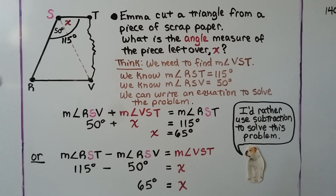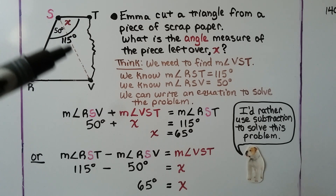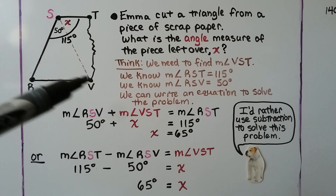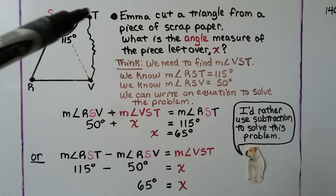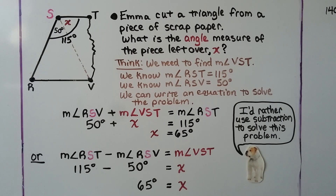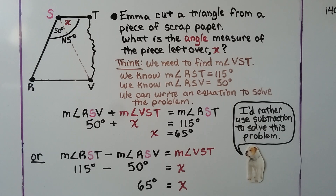Emma cut a triangle from a piece of scrap paper. What is the angle measure of the piece left over — this angle x? She had this piece of scrap paper and cut it from S to V, making a straight line and a triangle. We need to find the measure of angle VST. We know the measure of angle RST is equal to 115 degrees — the big arc tells us that. We also know the measure of angle RSV is 50 degrees.